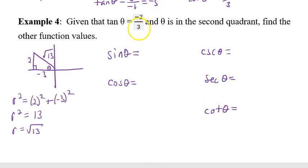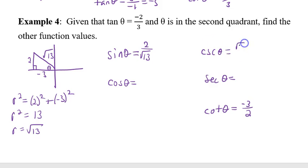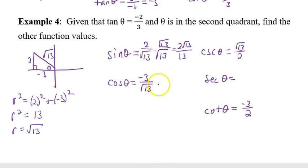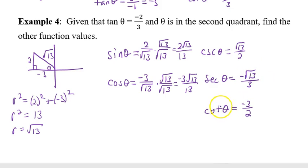Now find the other five values. Cotangent is easiest — just flip the tangent: cotangent = −3/2. Sine = opposite/hypotenuse = 2/√13, rationalized as 2√13/13; cosecant = √13/2. Cosine = adjacent/hypotenuse = −3/√13, rationalized as −3√13/13; secant = −√13/3. That finds all the remaining trig values, and concludes this lesson.